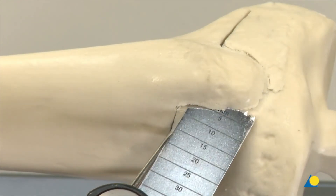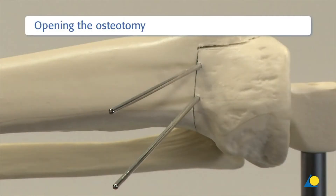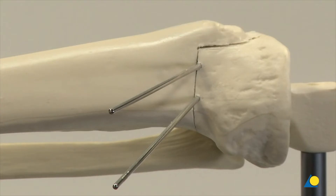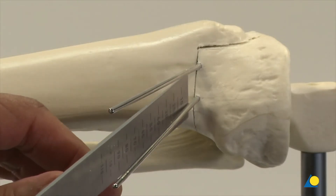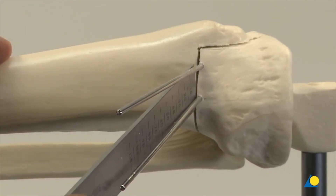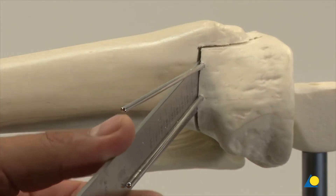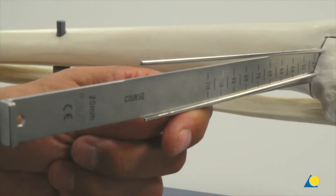After the osteotomy cuts have been made, a ruler can be used to measure and verify that the osteotomy was completed as planned. To stiffen the proximal segment and help prevent fracturing of the articular surface of the tibia, the two guide wires are retained in the bone while the osteotomy is opened and spread. Light hammer blows are used to insert an osteotomy chisel into the transverse osteotomy to the depth of the lateral bony hinge, so that the insertion depth corresponds with the cutting depth.